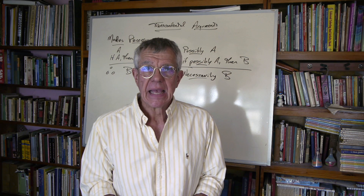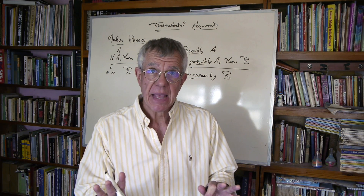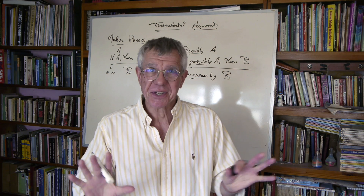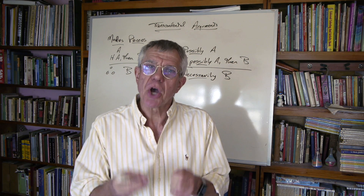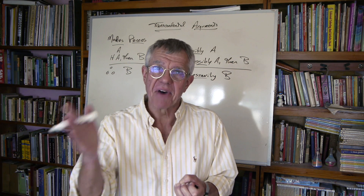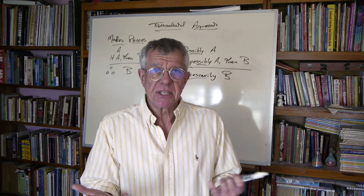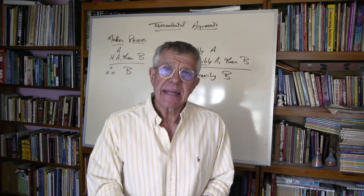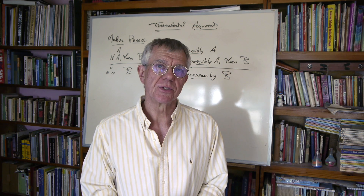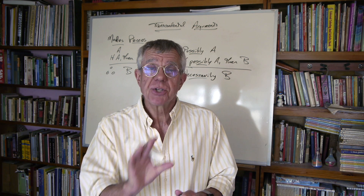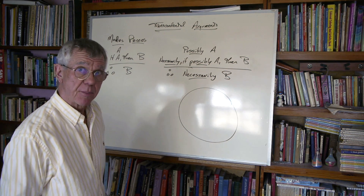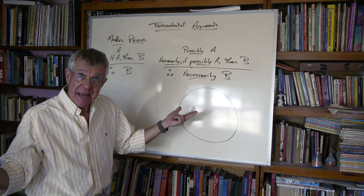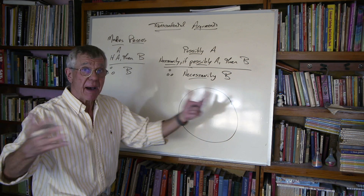This doesn't follow in every system of modal logic, but it works in the most popular and oldest form — S5 — after the work of C. I. Lewis, who developed five systems of modal logic. S5 is the system taken for granted by figures including Anselm, Aquinas, Leibniz, and Kant. In S5, necessity is truth in all possible worlds, and possibility is truth in some possible worlds. We can think of a class of possible worlds — possible circumstances and situations — to which we apply claims about metaphysics, science, or logic.